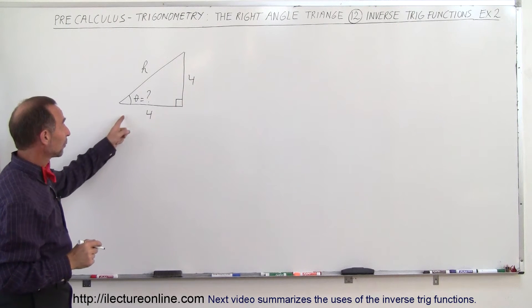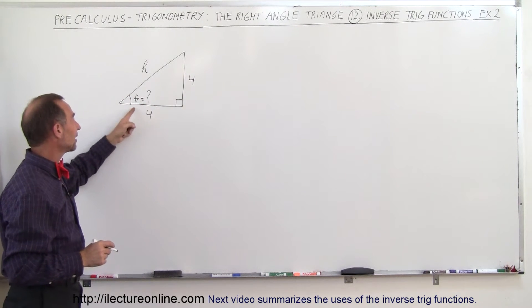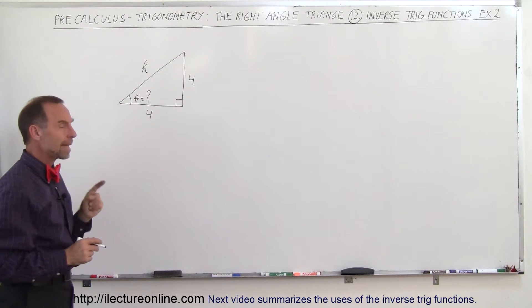Notice that we're given the opposite side to the angle, we're given the adjacent side of the angle, we don't know the hypotenuse, and we're looking for the angle.